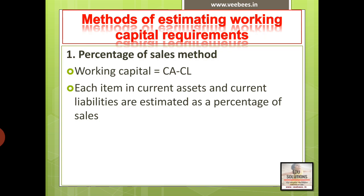The first method we will discuss is the percentage of sales method. As the name indicates, in this method we will calculate each item of current assets and current liabilities as a percentage of sales. We will use the equation: working capital equals current assets minus current liabilities. Each item in current assets and current liabilities is estimated as a percentage of sales.